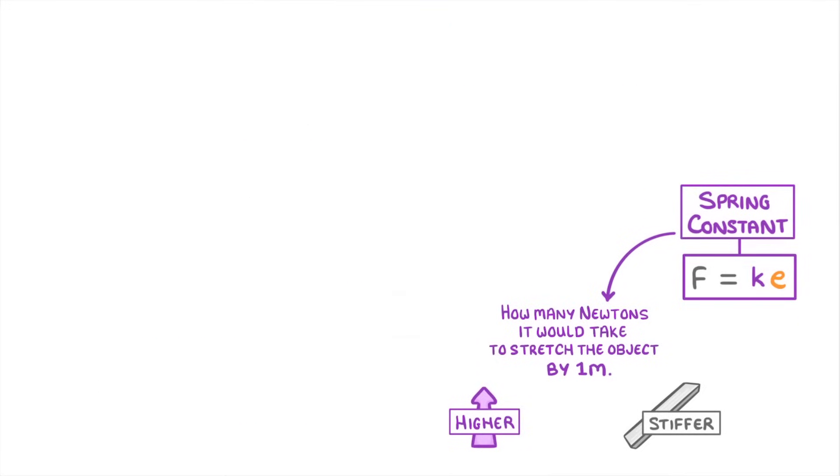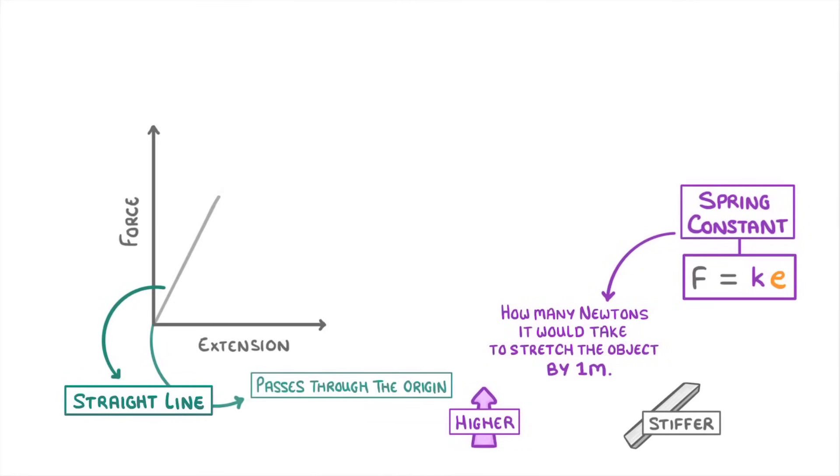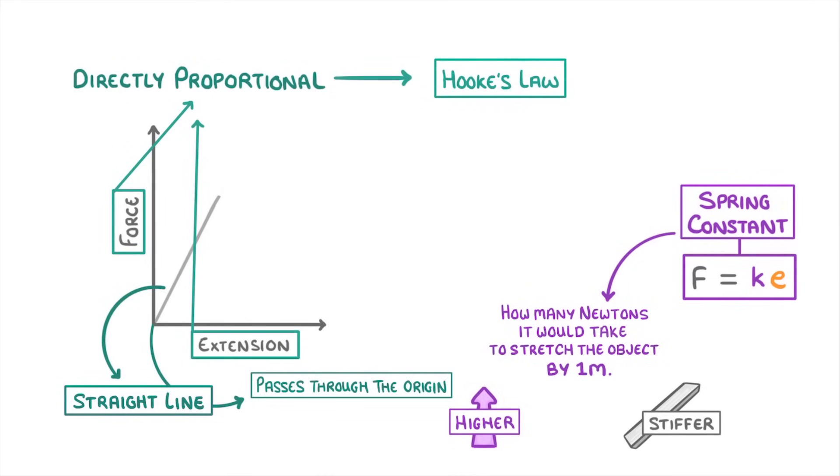We can show this relationship by plotting a graph of force against extension. As the force increases, so does the extension, and because it's a straight line that passes through the origin, we can tell that force and extension are directly proportional. We call this relationship Hooke's law, and importantly, all of this deformation will be elastic deformation, meaning that once the force is removed, the object will return to its original shape.